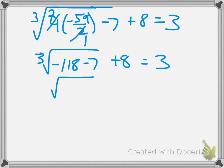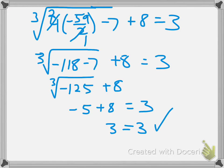which becomes the cube root of negative 125. The cube root of negative 125 is negative 5. And negative 5 plus 8 is indeed 3. So this checks out.